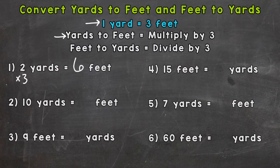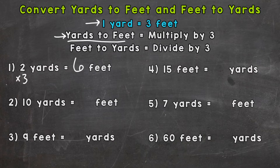Number two: ten yards equals how many feet? In this situation we would have ten yardsticks — three plus three plus three, ten times. But it's easier to use multiplication than add up ten threes. Going yards to feet, we multiply by three. So ten times three gives us thirty feet.